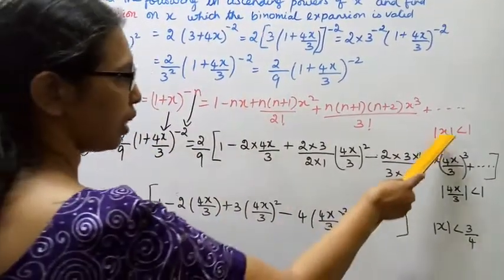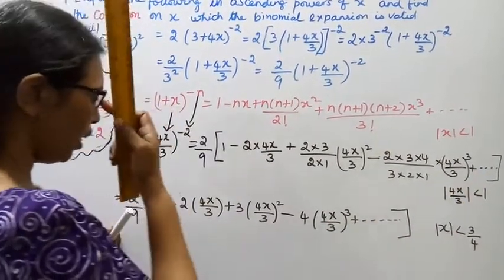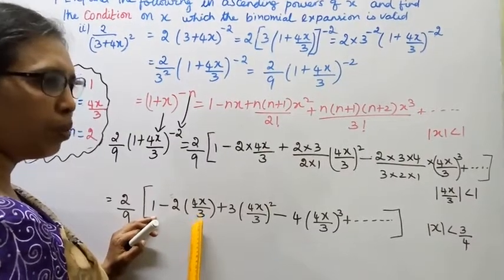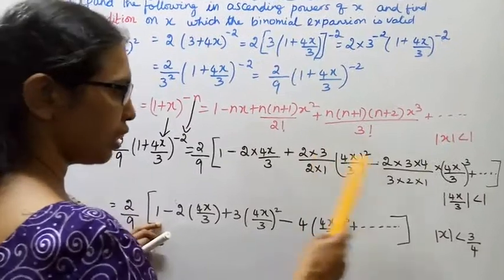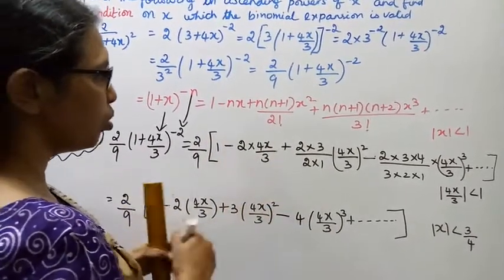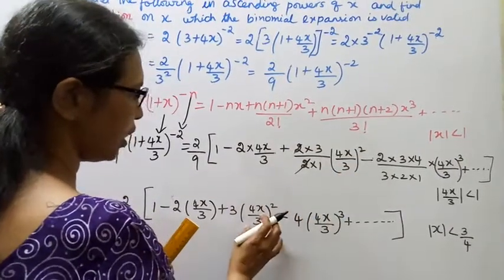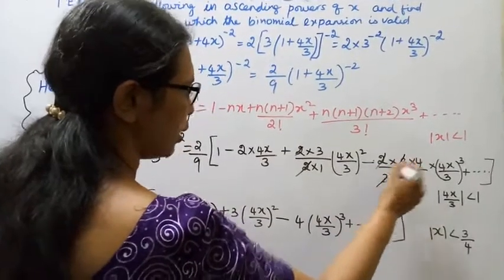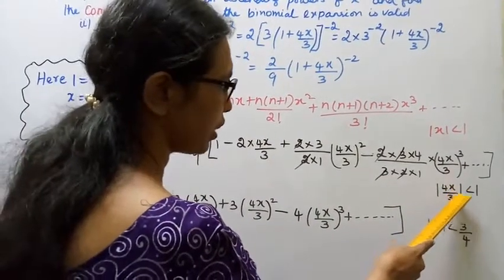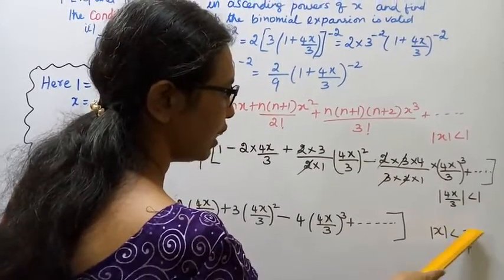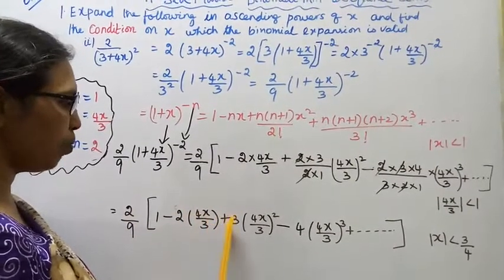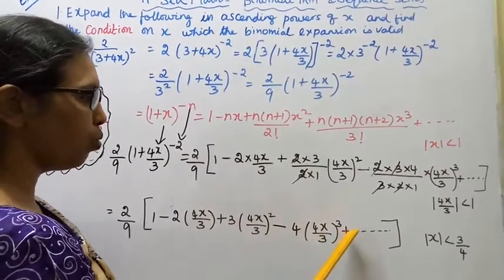The condition on x is: since x in the formula is 4x/3, we need mod(4x/3) < 1, which gives mod x < 3/4. The final answer is: 2/9 × [1 − 2(4x/3) + 3(4x/3)² − 4(4x/3)³ + etc.], with condition mod x < 3/4.